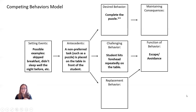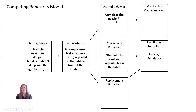Our next step in the model looks at the antecedent situation: when the student is presented with the puzzle, they have three options. They can engage in the challenging behavior, which is probably what's been happening. Looking up at the other option — the desired behavior — that would be completing the puzzle. The desired behavior is what we would ideally like the student to be doing, though it's probably not what's happening right now and may not happen for a while. This is our overall goal.